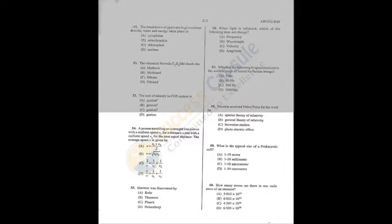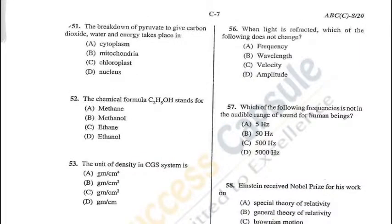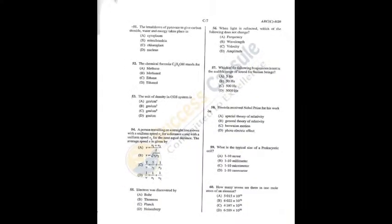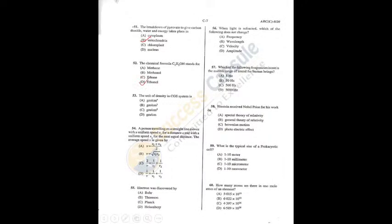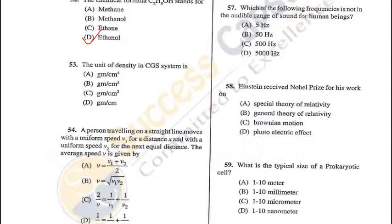Question 51: The breakdown of pyruvate to give carbon dioxide, water, and energy takes place in the mitochondria — B is the correct answer. Question 52: The given chemical formula is of ethanol — D is the correct answer. Q51 = B, Q52 = D. Question 53: The unit of density in the CGS system is g per cubic centimeter — B is the correct answer.